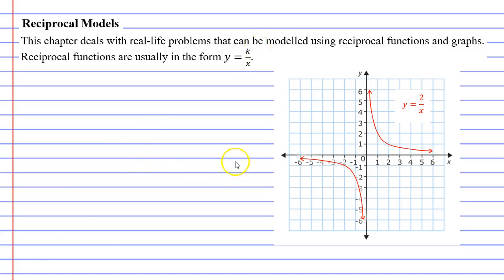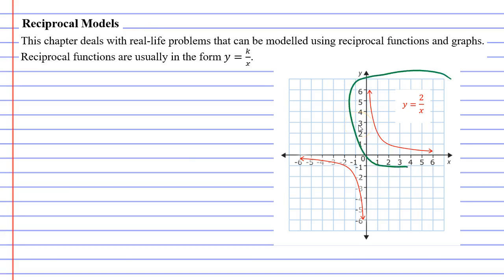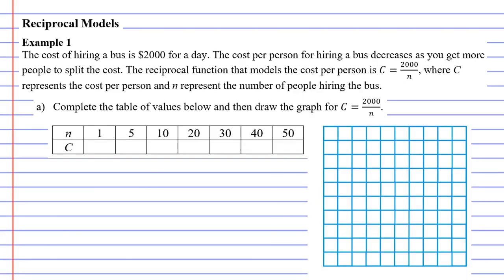When we think of reciprocal graphs, known as hyperbolas, we think of a graph similar to the one we can see here. When we model them off real-life problems, you'll find they usually don't have two branches. In fact, all the ones I've seen only have one branch, and it always seems to be the branch in the positive sector, where we've got only positive values on our x and y axes. Anyway, let's get into example one.